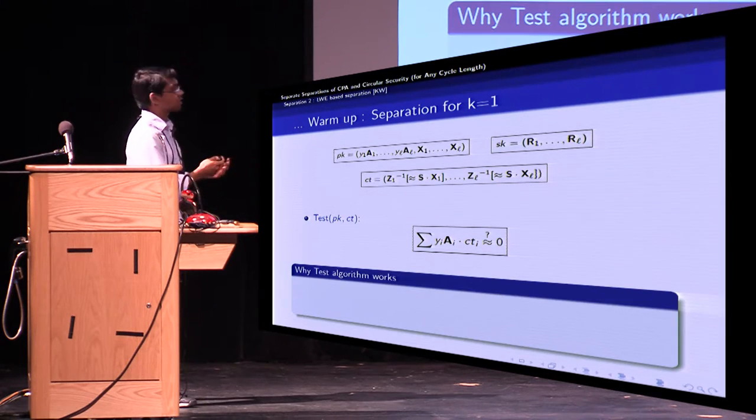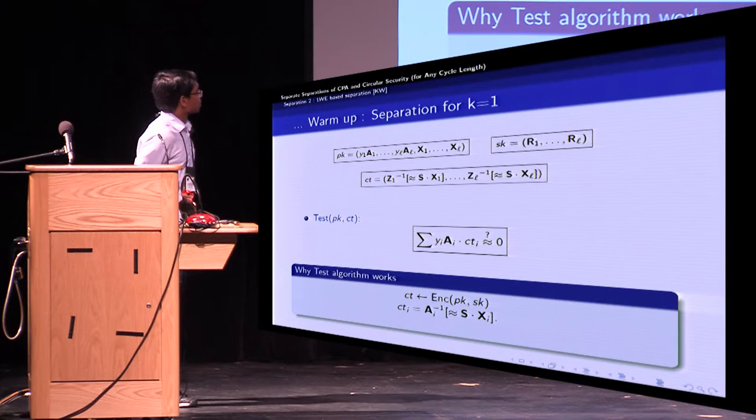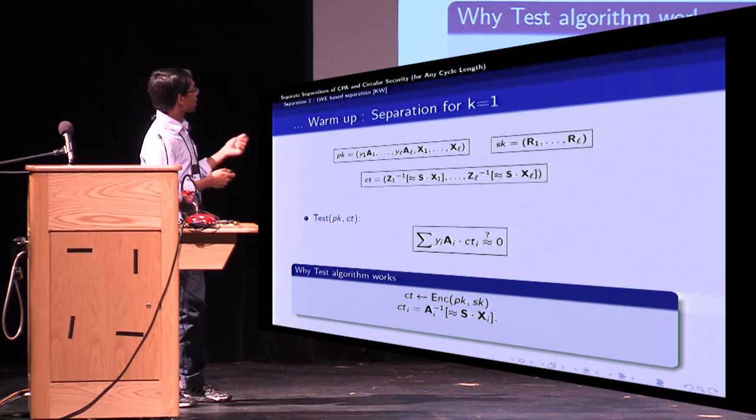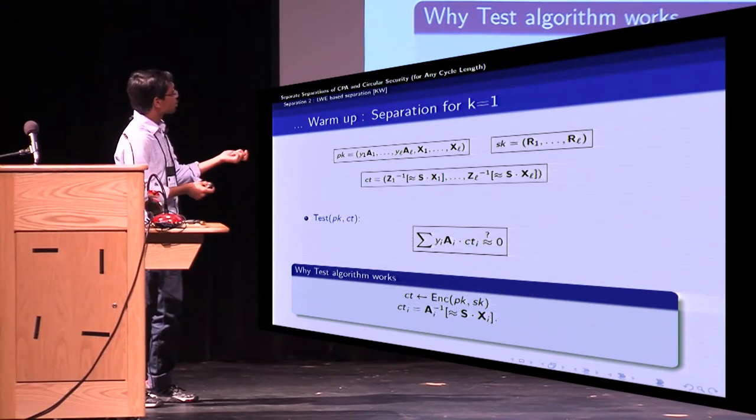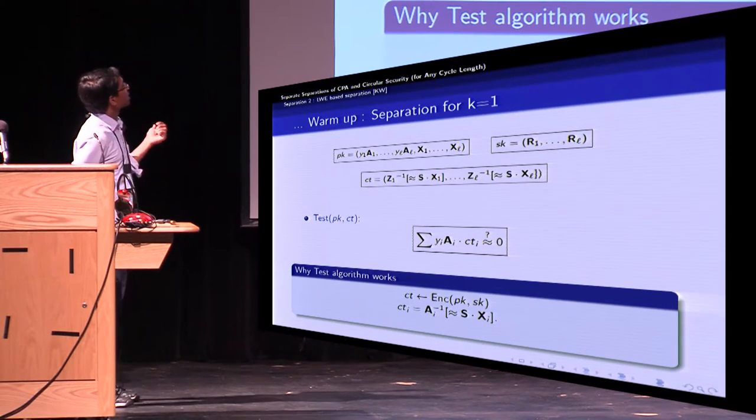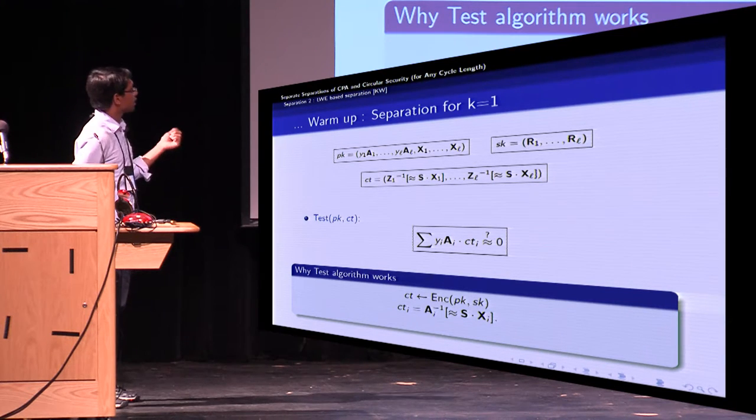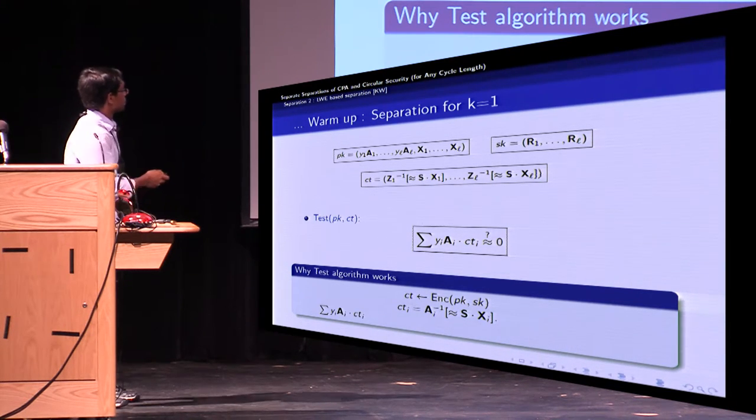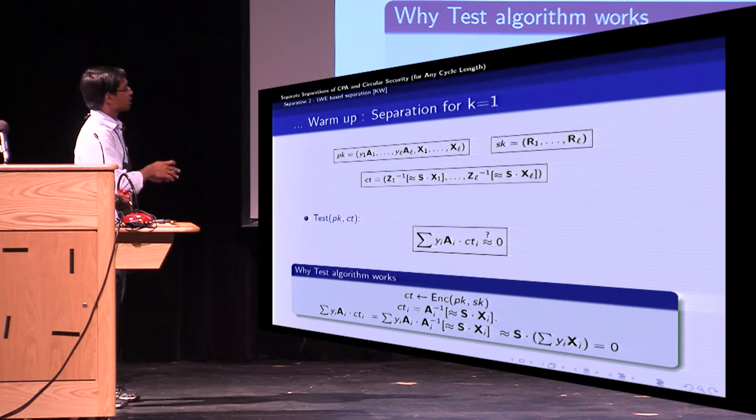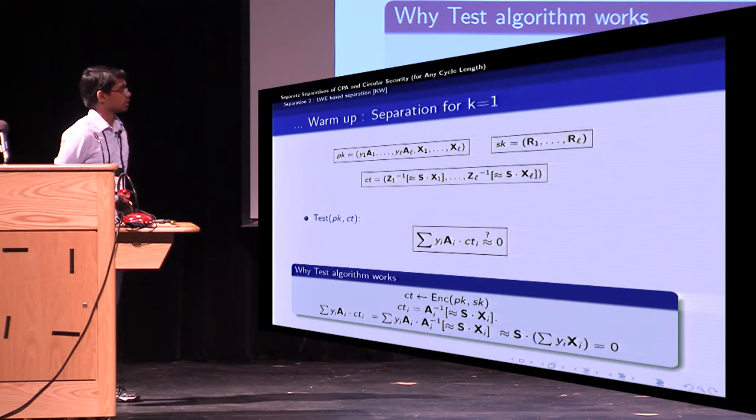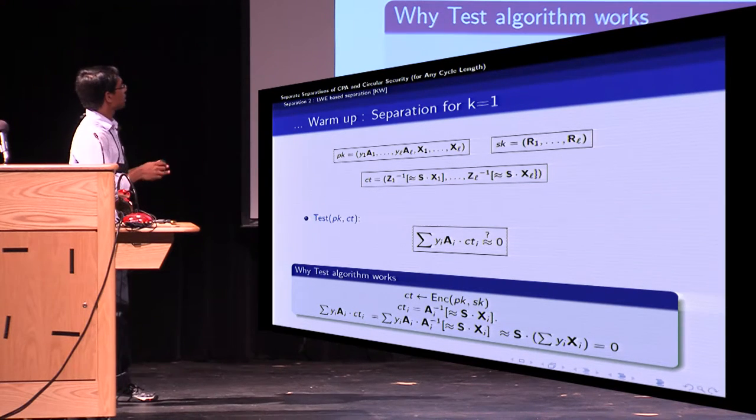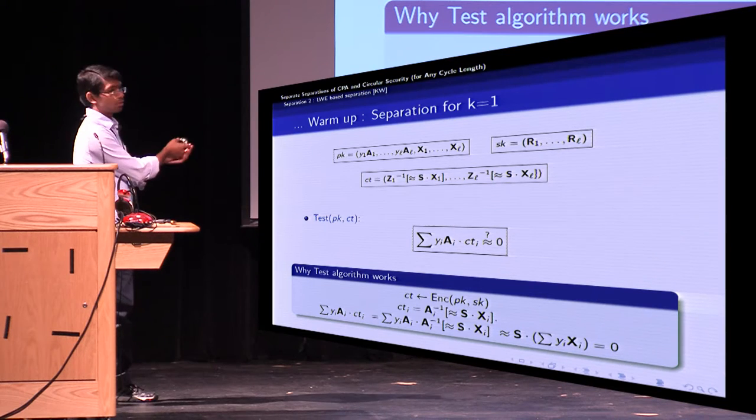To see why this works, let's look at the encryption of the secret key. So the i-th component is A_i inverse of an approximation of S times X_i. So now if you multiply this i-th component with the i-th component of the public key, you'll get Y_i times A_i times A_i inverse of S times X_i. So this is nothing but Y_i times S times X_i. So if you sum them all up, it is approximately S times summation Y_i X_i, which is equal to zero.